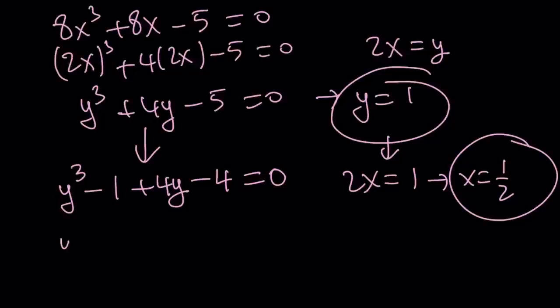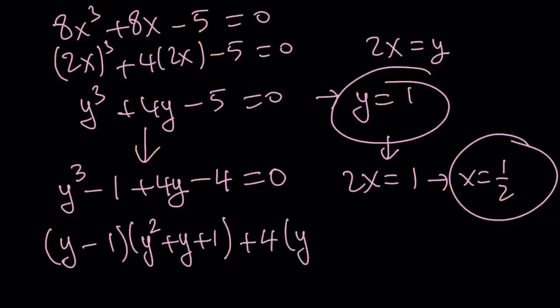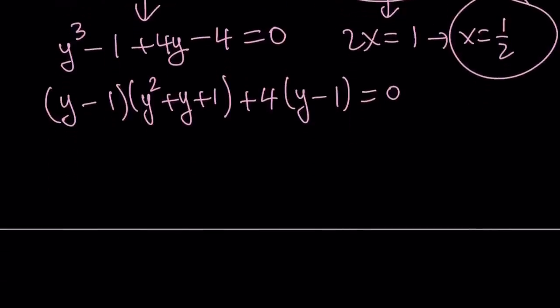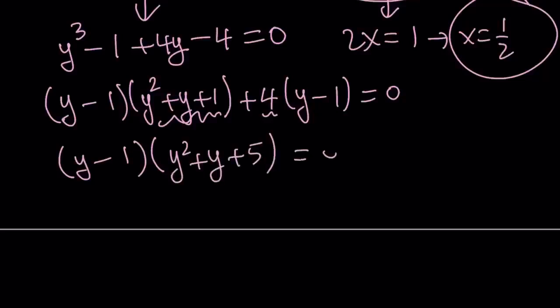y cubed minus 1 is a difference of two cubes. So I can factor as follows. And here you can clearly see that y equals 1 is a solution. That's how we were able to factor it. Let's take out y minus 1 and try to find the other solutions.